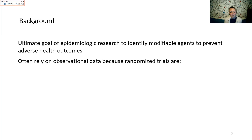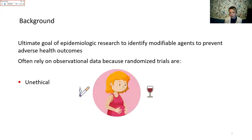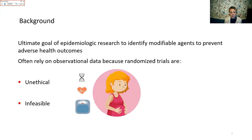I personally believe the ultimate goal of epidemiologic research is to identify modifiable agents in order to prevent adverse health outcomes in the future. Often as epidemiologists we rely on observational data because randomized trials are unethical for certain exposures. Most of my work has centered around perinatal health — for example, studying tobacco or alcohol exposure wouldn't get past the IRB if I tried to randomize women to those exposures. Certain exposures like genetics, pre-existing conditions, or BMI are also infeasible to randomize.